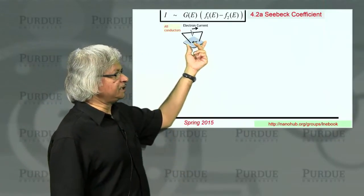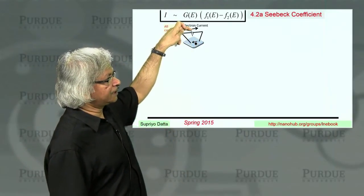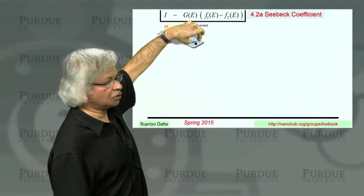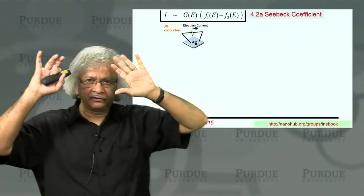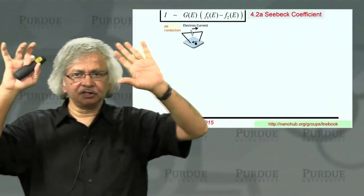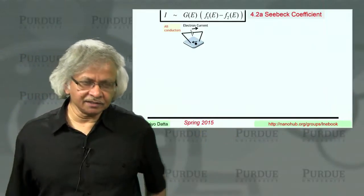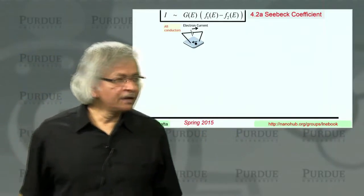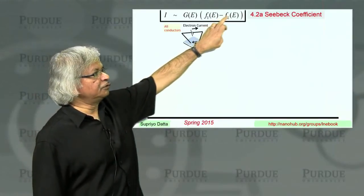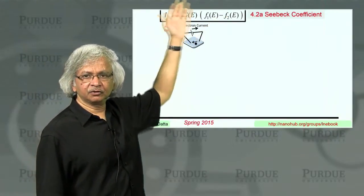Of course, any material when you connect a battery across two probes creates an electrochemical potential difference between the two contacts, this mu1 and mu2, which makes F1 and F2 different from each other, and so you have a current.